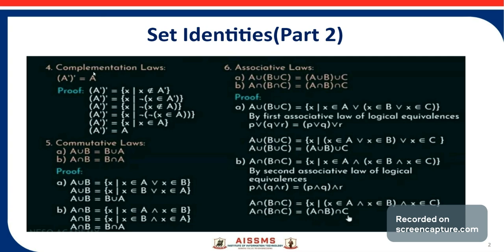Next are the commutative laws. There are two laws: first, A union B is equal to B union A, and second, A intersection B is equal to B intersection A. For the first law, A union B is the set of all X such that X belongs to A or X belongs to B.